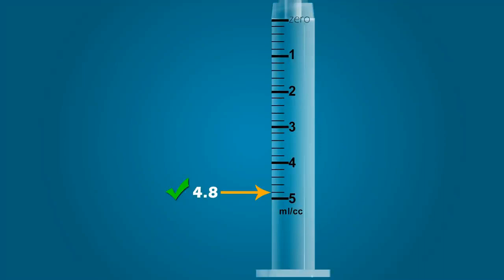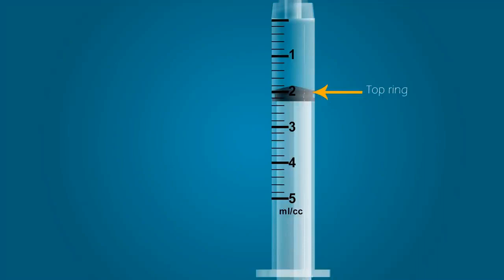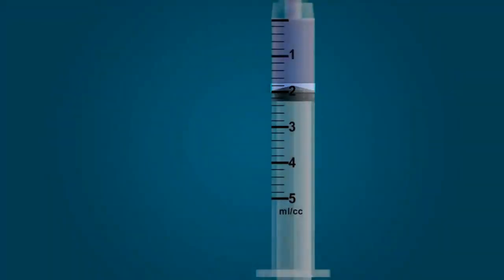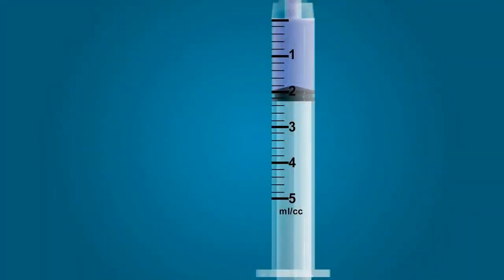Now let's get a little more realistic. Instead of using an arrow, let's use the top ring of the stopper as our indicator and fill the syringe with medication. When observing the stopper, you will notice that there is a bit of a cone shape at the tip. Ignore the cone-shaped area and measure the amount of medication by focusing only on the top ring of the stopper. For example, notice the top ring highlighted in red is touching the 2 milliliter line, indicating that the syringe contains 2 milliliters of medication.